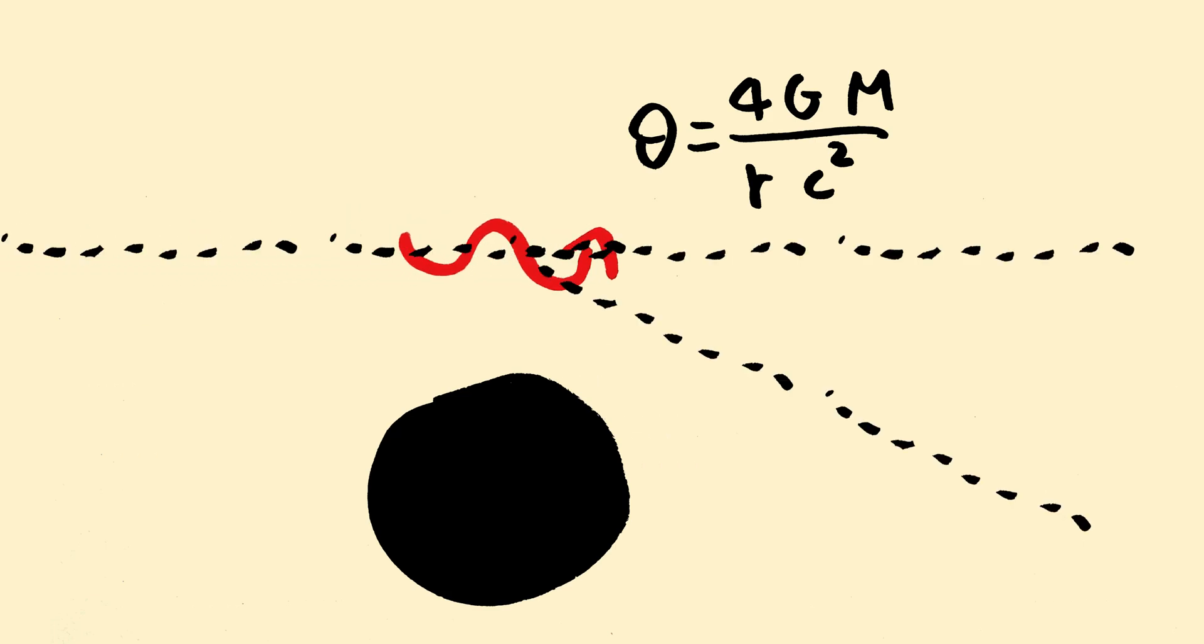In fact, we can calculate this gravitational lensing using this formula. The angle of deflection, theta, is equal to four times the gravitational constant times the mass of the massive object divided by the distance between the object times the speed of light squared, approximately.